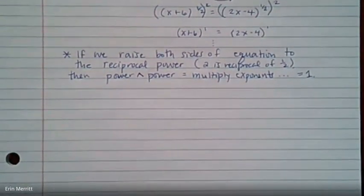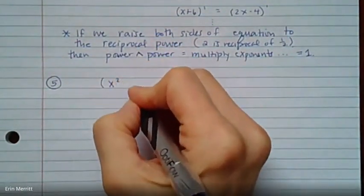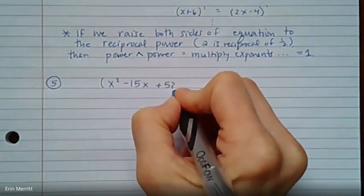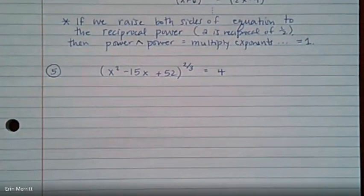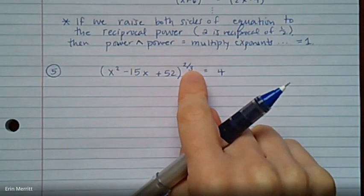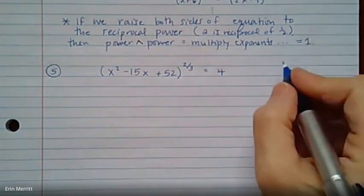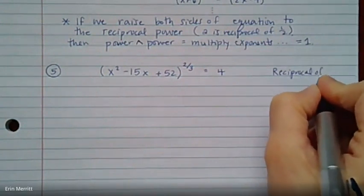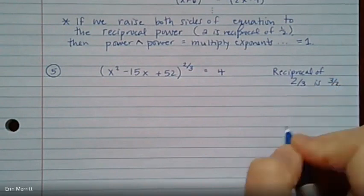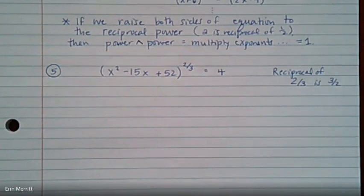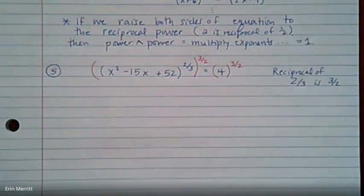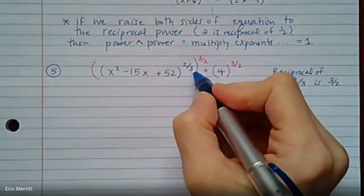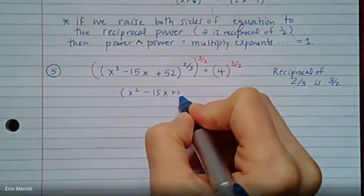So let's show how we can use that to our advantage with the last example of the notes. We've got x squared minus 15x plus 52 raised to the 2 3rds power, and then equals 4. Rather than writing this as this thing squared and then the cube root, I don't want to do that. What I want to think of is what would be the reciprocal of 2 3rds? So the reciprocal of 2 3rds is simply, flip it over, 3 halves. What we're going to do here is raise both sides to the reciprocal power. So on the left, I'm going to raise it to the 3 halves power. On the right, I'm going to raise it to the 3 halves power. So remind yourself what happens. Power raised to a power, we multiply. 2 3rds times 3 halves gives me x squared minus 15x plus 52, now raised to just the first power.